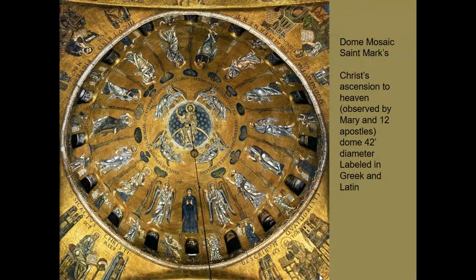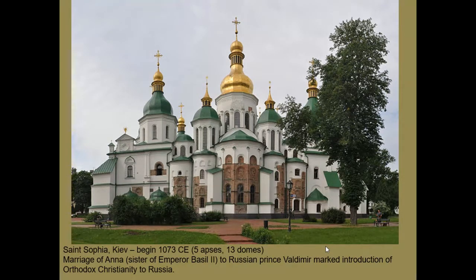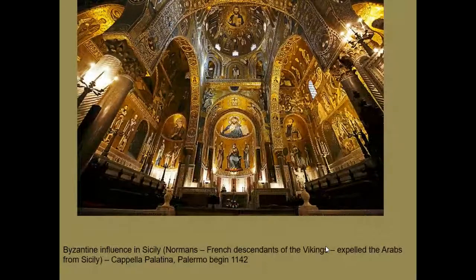The dome mosaic in St. Mark's shows Christ ascending toward heaven, represented by a blue field with stars, surrounded by Mary, angels, and apostles. The dome rests on windows visible around its base. This is very much in Venice, but an imitation of the style of the Eastern Empire. We also see the Eastern Orthodox style introduced into the Russian Empire, beginning with the marriage of Anna, sister of Eastern Emperor Basil II, to a Russian prince. As that marriage took place, Eastern Orthodox architectural tradition, religious tradition, and image-making all spread throughout the Russian Empire.